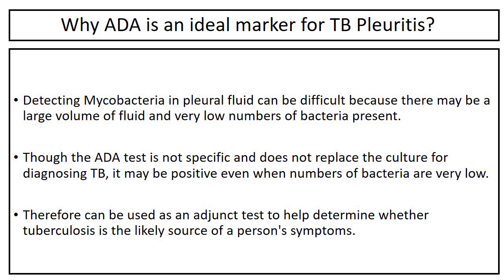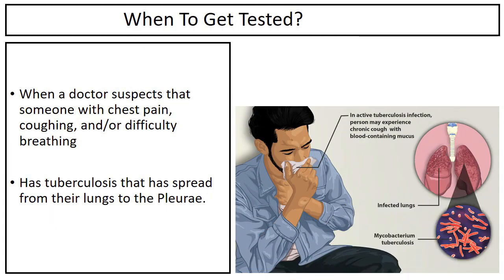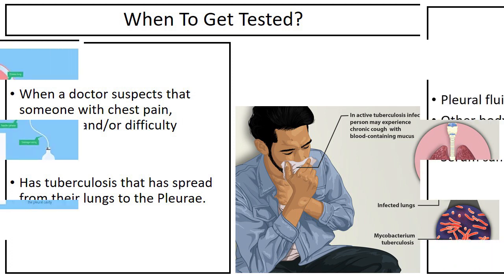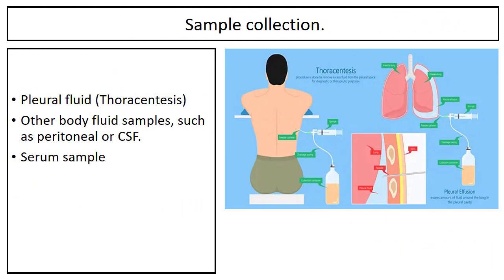The ADA test should be ordered when a doctor suspects that someone with chest pain, coughing, and/or difficulty breathing has tuberculosis that has spread from the lungs to the pleura.